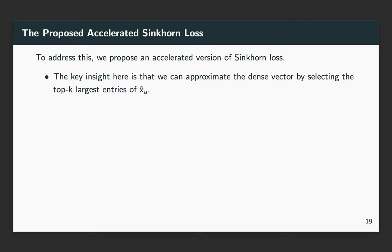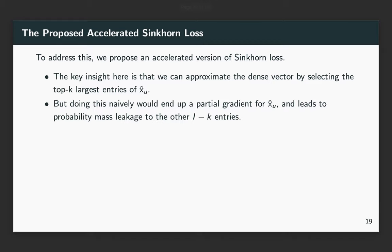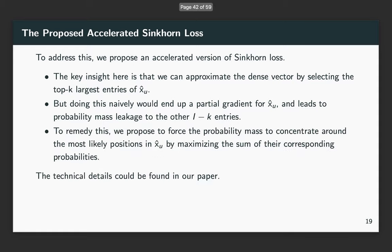To address this, we propose an accelerated version of Sinkhorn loss. The key insight here is that we can approximate the dense vector by selecting the top-k largest entries. But doing this naively would lead to a partial gradient for x_u-hat and consequently result in probability mass leakage. To remedy this, we propose to force the probability mass to concentrate around the most likely positions in x_u-hat by maximizing the corresponding probabilities.